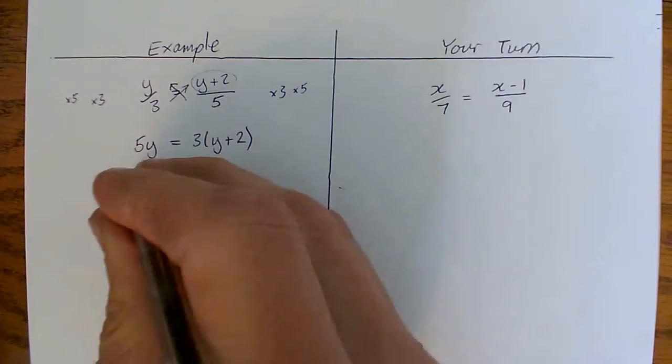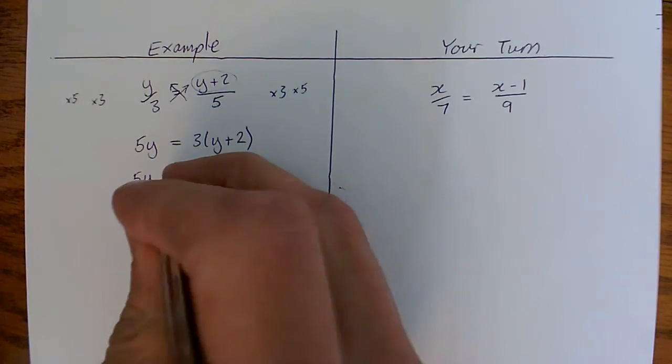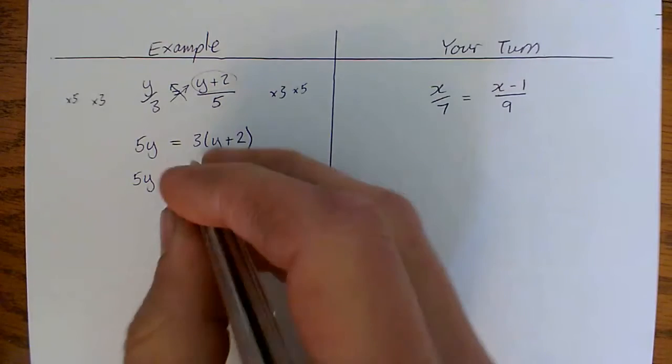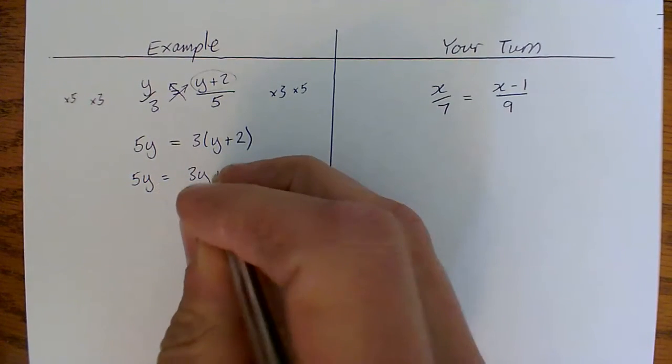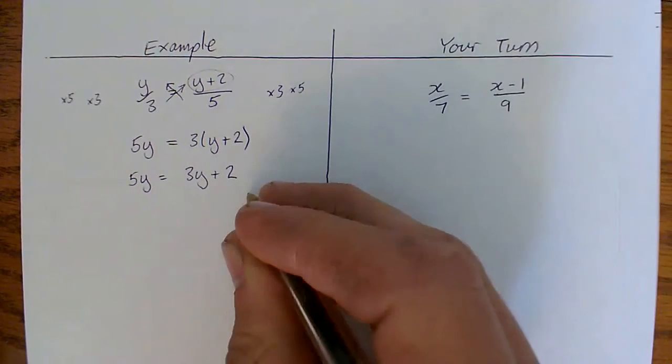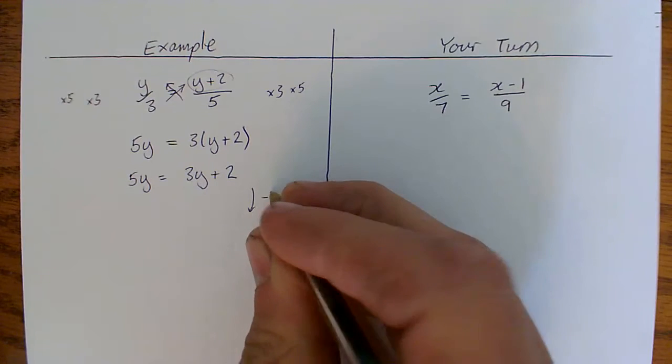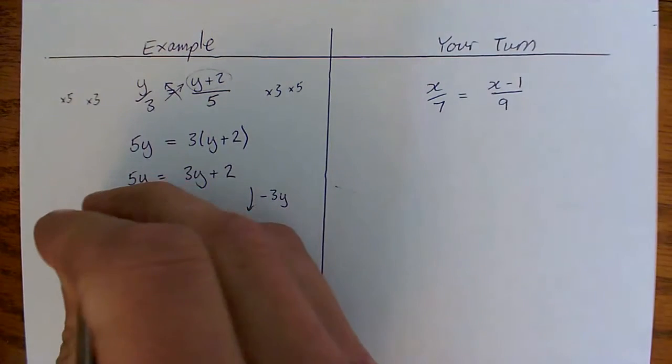Now we've got this, we can proceed as we would with something with brackets in it. So we get 5y equals 3y plus 6. And now we can proceed as an equation with an unknown on both sides.